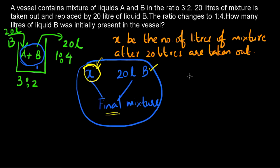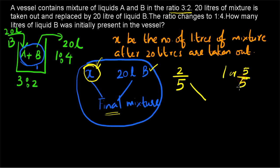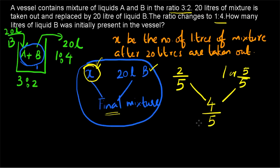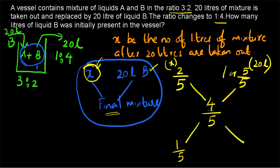In x liters, how much of B is present? The ratio is 3 is to 2, so B will be 2 by 5. B is getting added — purely B, or 100% of B — so we represent it as 5 by 5 for easiness. In the final mixture, the ratio is 1 is to 4, so the quantity of B will be 4 divided by 4 plus 1, which is 4 by 5. We know this x corresponds to the remaining mixture and 20 liters is being added.